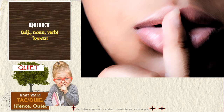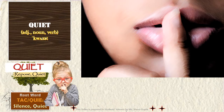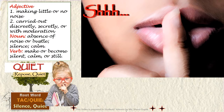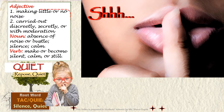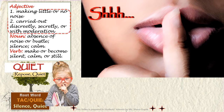Moving on to our next word root, QUI — this one you can't forget because the root means 'quiet', which is a common word in English. One thing worth highlighting is that the word 'quiet' can be used as an adjective, a noun, and even a verb. Its use as an adjective is most common — like when you ask someone to be quiet, you are instructing them to make little or no noise. Quiet can also describe an activity carried out discreetly, secretly, or with moderation.